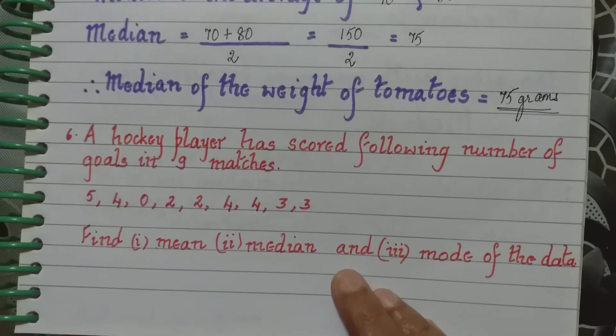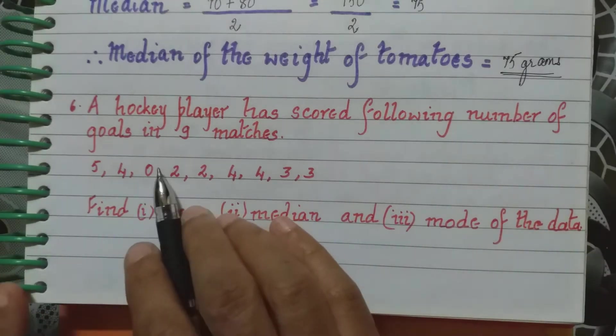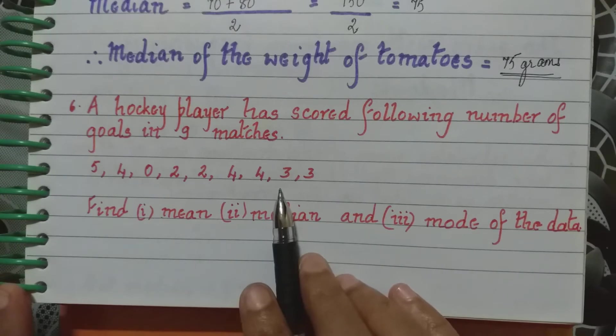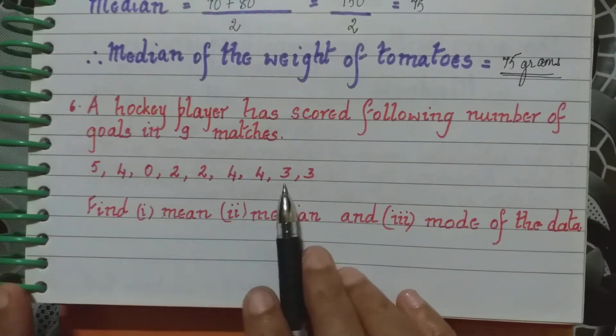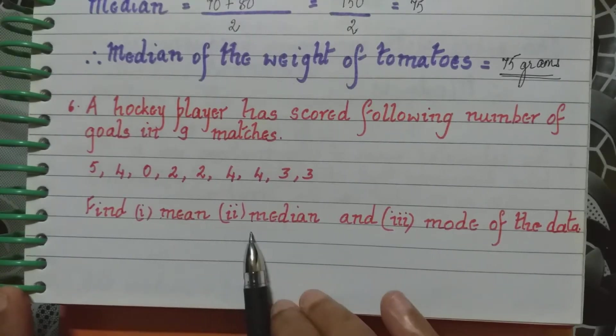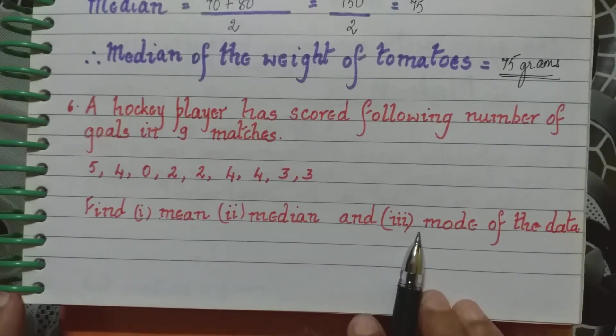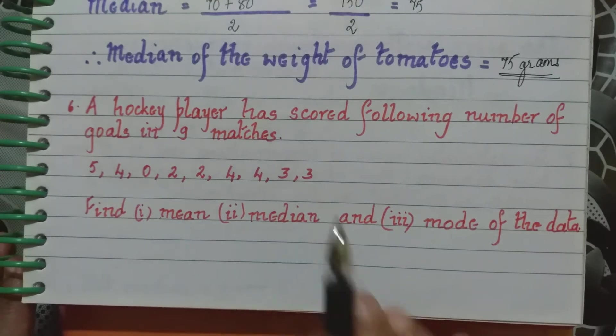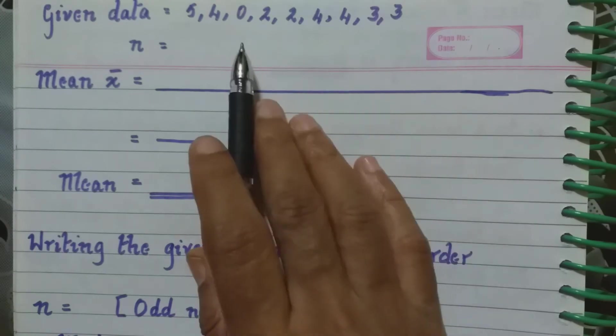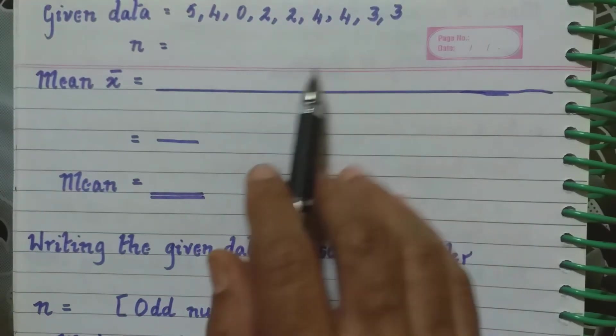Going now to the sixth question. A hockey player has scored the following number of goals in 9 matches. So they have given here the number of goals. What is the score in 9 matches?